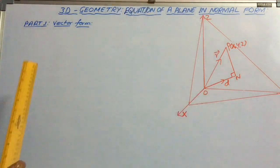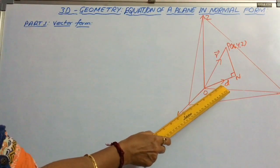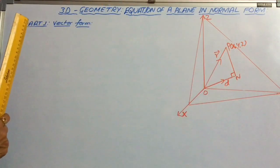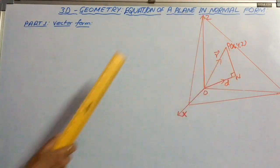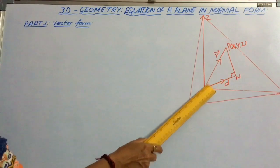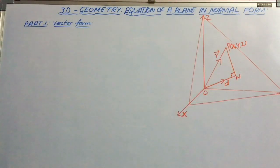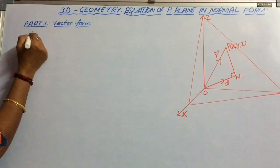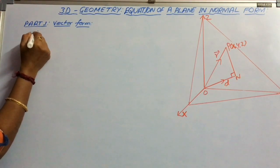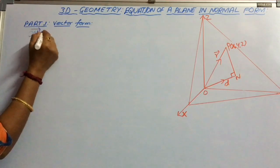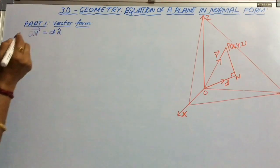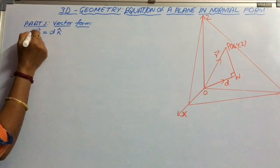Let us consider a plane. Let D be the distance from the origin to the plane, and ON is the normal from the origin to the plane. Therefore, vector ON, that is the normal vector from the origin to the plane, can be written as D n cap, where n cap is a unit vector along the direction of ON.